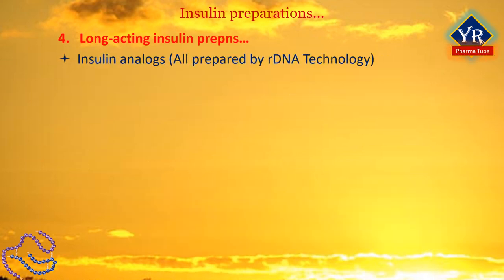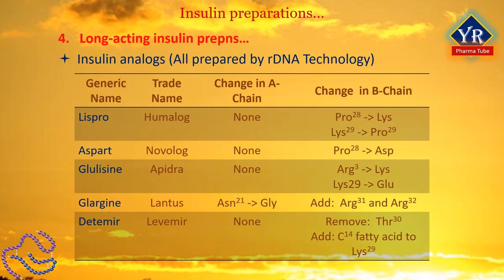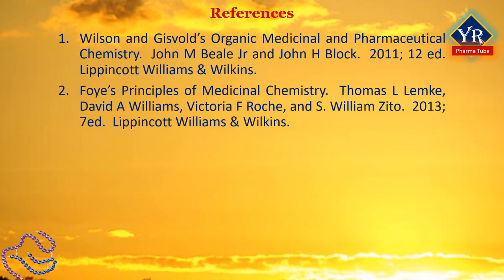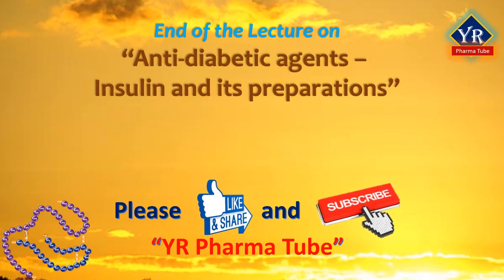The table shows the insulin analogues, all prepared by recombinant DNA technology, in which the changes in A chain and B chain are shown. This is the list of references followed for the lesson. That is all in this video on insulin and insulin preparations. In the next video, we will discuss the sulfonylureas. Till then, never stop learning and never stop watching my videos. Thank you for watching this video.